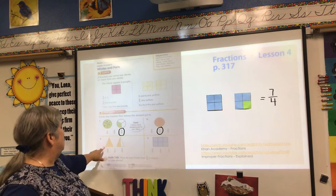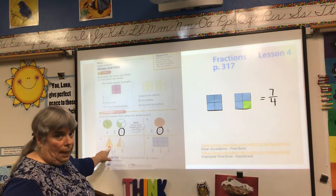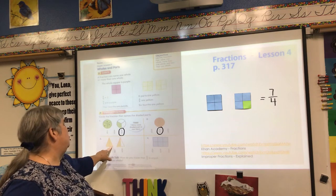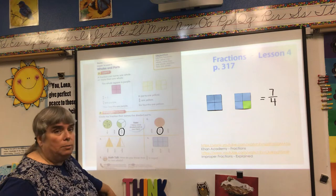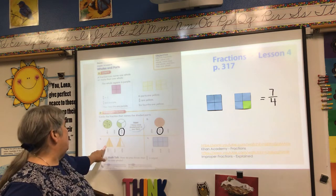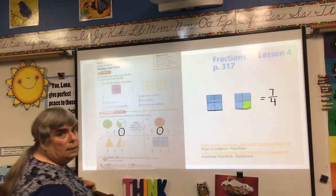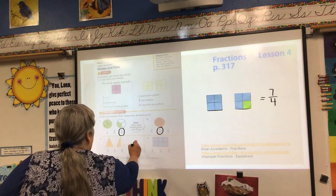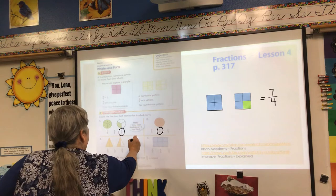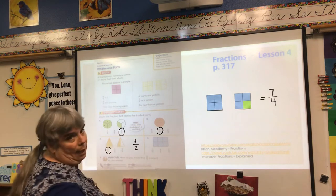Now I have triangles. I have a triangle split in half — two equal parts. And then I have a second triangle also split into two equal parts, but only one of them is shaded. So let's count: one, two, three. I know that this is split into two equal parts, and I have three of them. So this is actually going to be three halves.